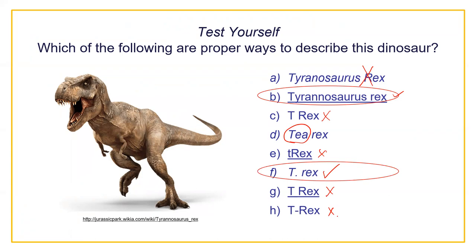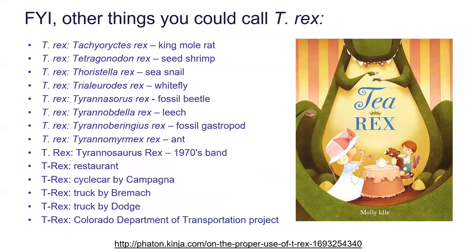Usually I have a question on the midterm something like this, so you can do that — easy mark. By the way, there are other things called T. rex that are other organisms besides the famous dinosaur. You can see Tachyoryctes rex — it's actually the name of a mole rat. And then there are other places, like restaurants and things like that. That was just for fun.